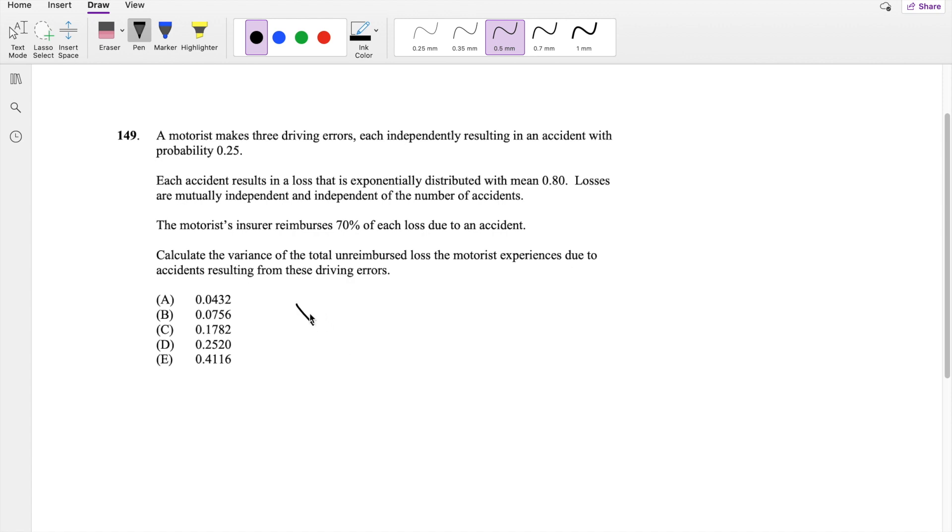So for example, I'm gonna assign X to be the number of accidents. So then number of accidents is a binomial distribution, right? Because you can either have an accident or not have an accident. With n being equal to 3, there's 3 accidents, and probability of each accident being equal to 0.25.